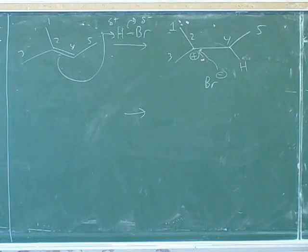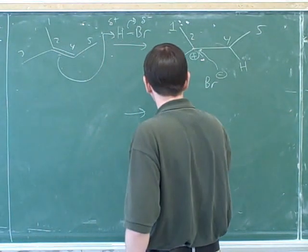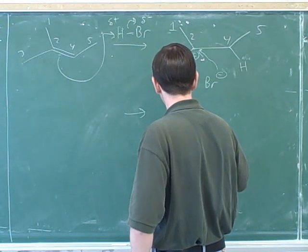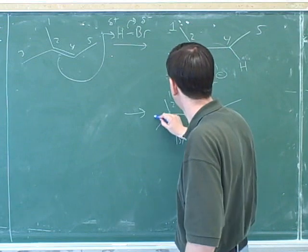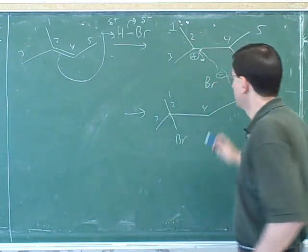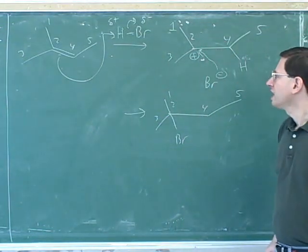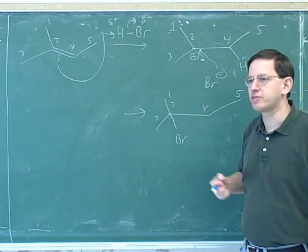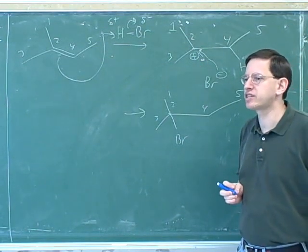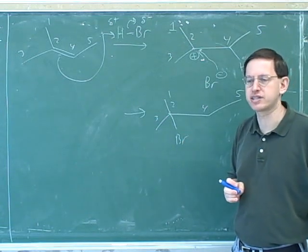All right. So let's make sure we've drawn the right products here. So that would give us this. Now, we're attacking something trigonal planar, and we've learned in the past that when you attack something trigonal planar, that gives you a maximum of two stereoisomeric products.